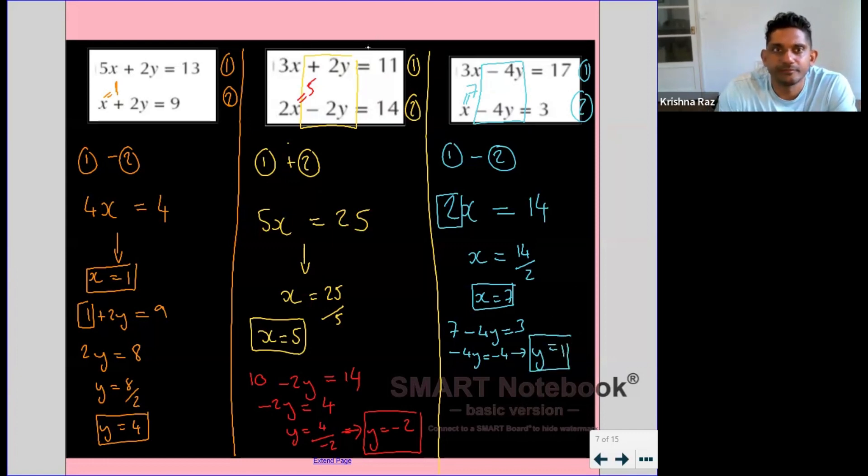So what did we see? We saw that when the signs were the same, we subtracted, and when they were opposite, we added. And when they were the same, we subtract.